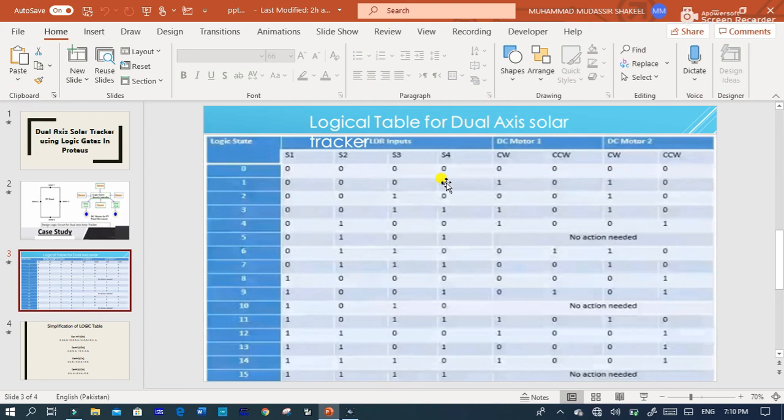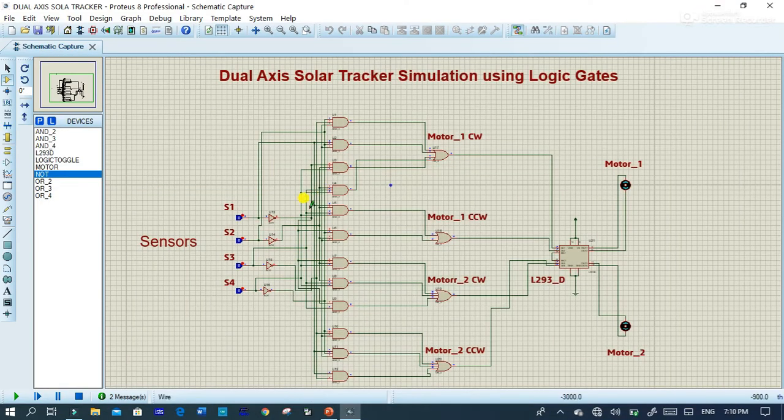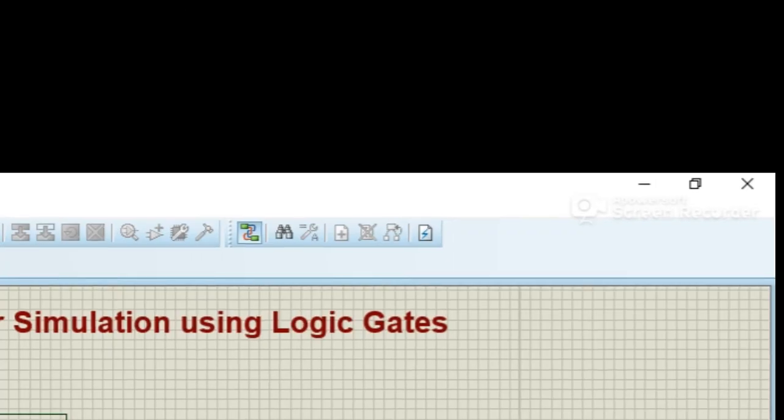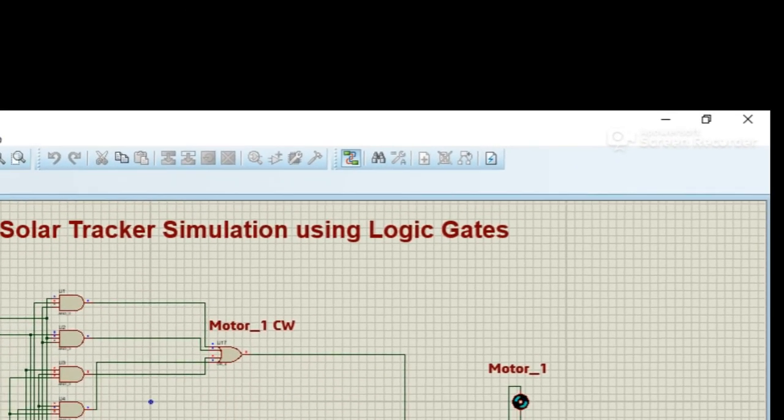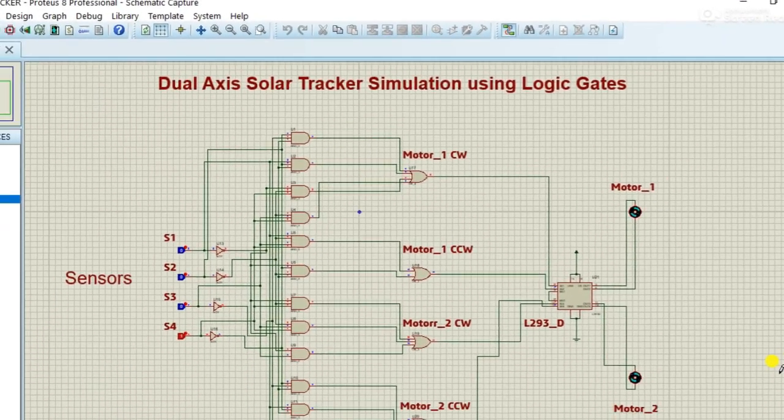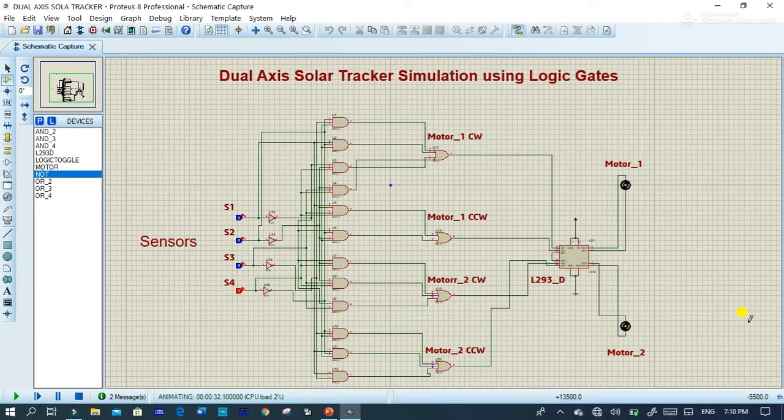So let's check other value when S4 is 1 and all the sensors are 0. So DC motor 1 will rotate in clockwise direction and motor 2 also rotate in clockwise direction. So let's verify it by changing the S4 to 1. You can see that motor 1 is rotating in clockwise direction and motor 2 is also rotating in clockwise direction.